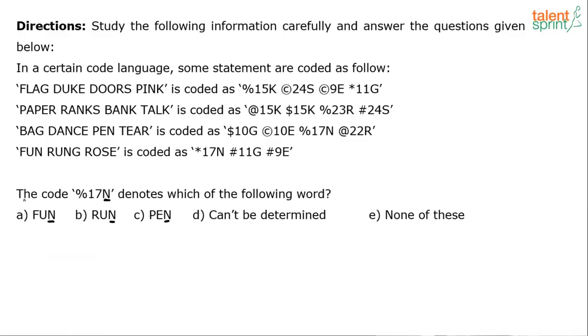Let's solve the next one. The code percentage 17N denotes which of the following words. N is the last letter of the word. Fun has got N, Run has got N, Pen has got N. But check, is percentage 17N a part of this? Yes, percentage 17N is here. If I look at the number 17, it should equal number of letters plus the position of N. Position of N is 14, which means the number of letters in the word should be 3. So by looking at percentage 17N, I know the word will have 3 letters and the last letter will be N. All three satisfy. So strictly answer should be cannot be determined.